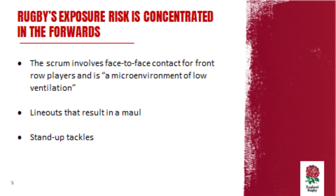Thinking about rugby, we know that rugby's exposure risk is concentrated in the forwards. This is because of the types of activities they take part in. For example, the scrum involves face-to-face contact for front row players in particular, and this has been described by Public Health England experts as a micro-environment of low ventilation. We know that ventilation and airflow is important — that's why there's so much greater risk of contracting COVID inside compared to outside — and the concern is that the scrum creates an environment where air cannot flow well. Other activities include the lineout that results in a maul, and also tackles where both players are upright and face-to-face.